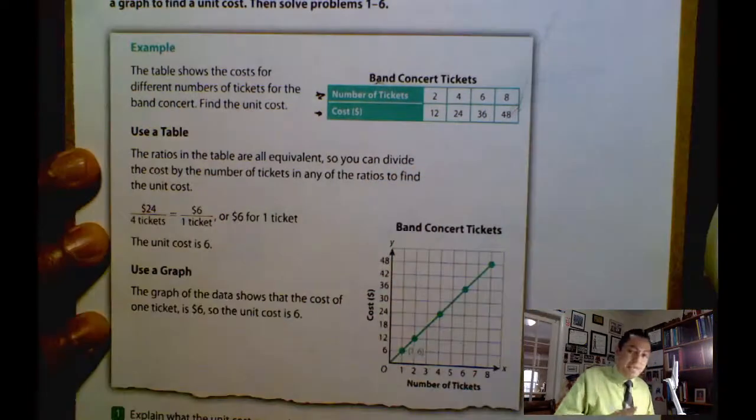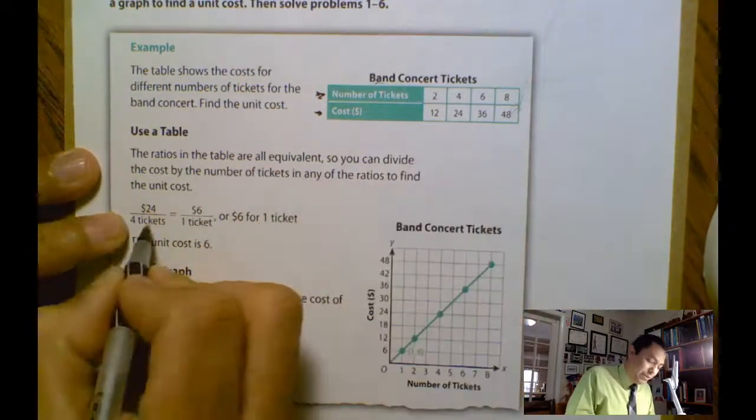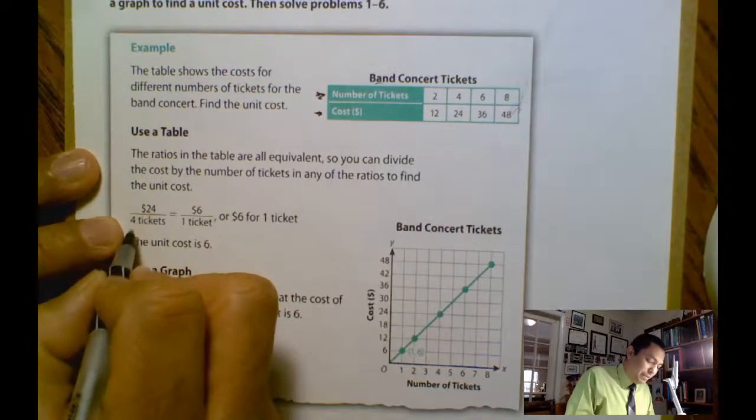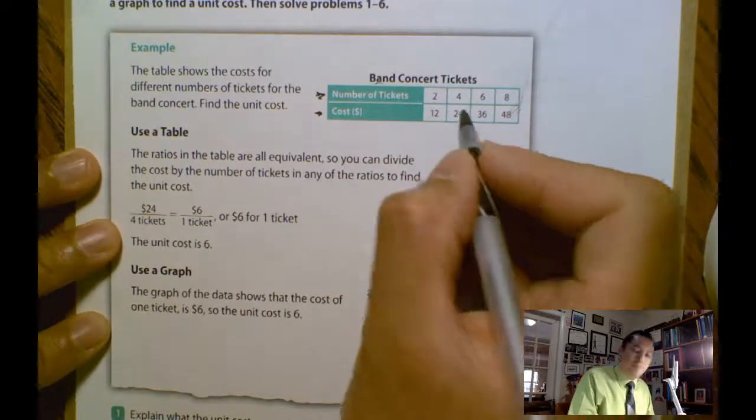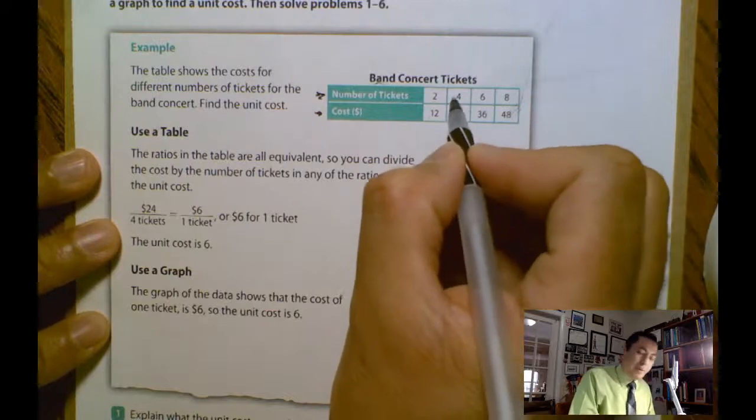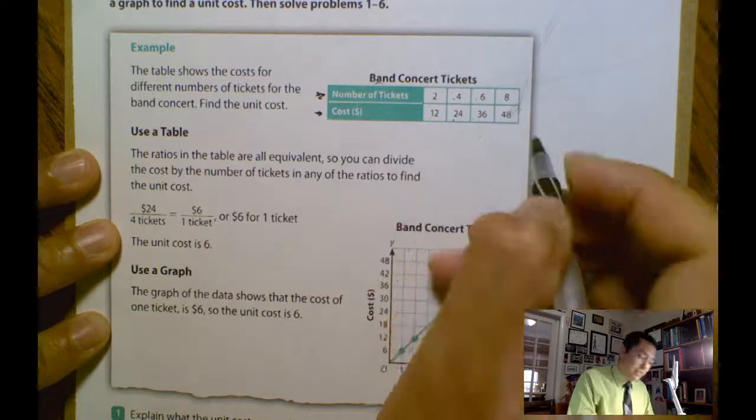The ratio in this case using the table are all equivalent because we just made the division. For example, 12 divided by 2 equals 6. 24 divided by 4, 6. 36 divided by 6, 6. 48 divided by 8, 6.